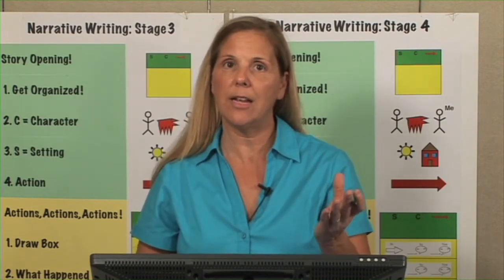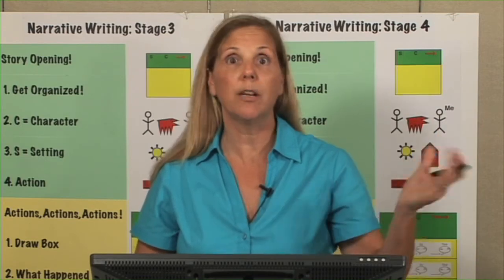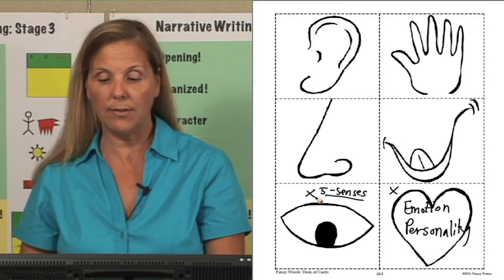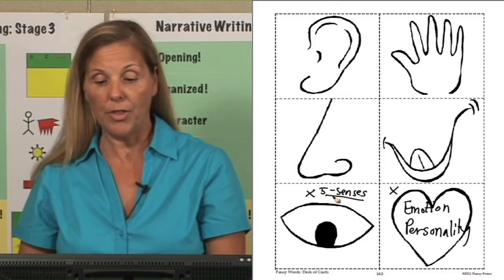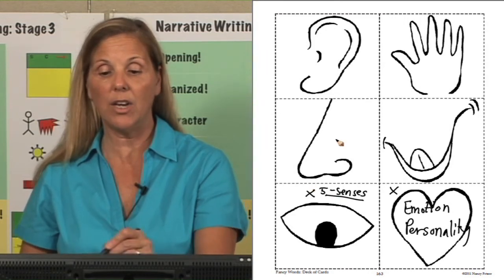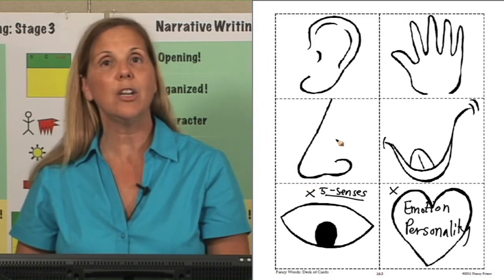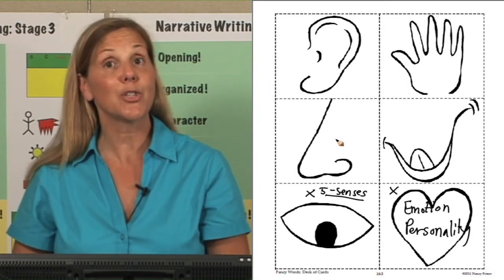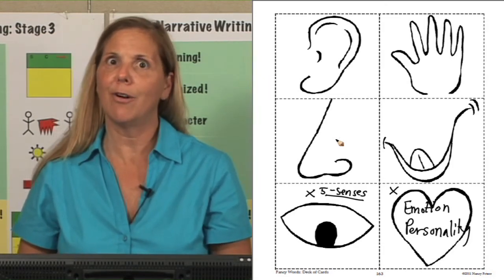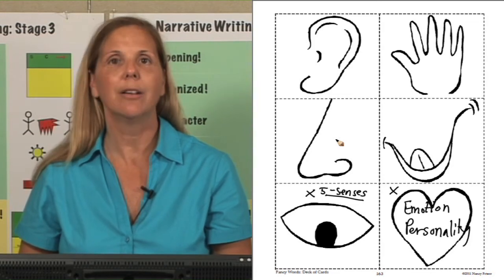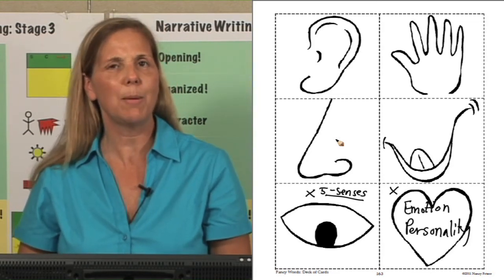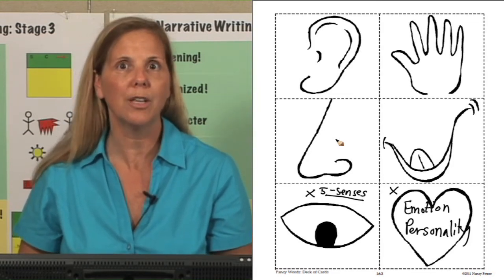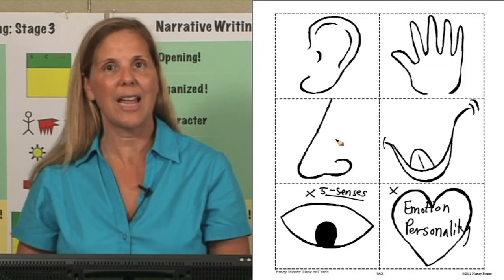We would use our what kind of statement. What kind of, and then whatever the noun is, dog would roll in a mud puddle. Are we going to use a five sense to describe what the dog looks like, smells, tastes, feels, or sounds like? Or are we going to use an emotion word, how does the dog feel? Or are we going to use a personality word? What kind of dog is he? He's a silly dog. I think personality is going to be best there. The silly dog rolled in the mud puddle.